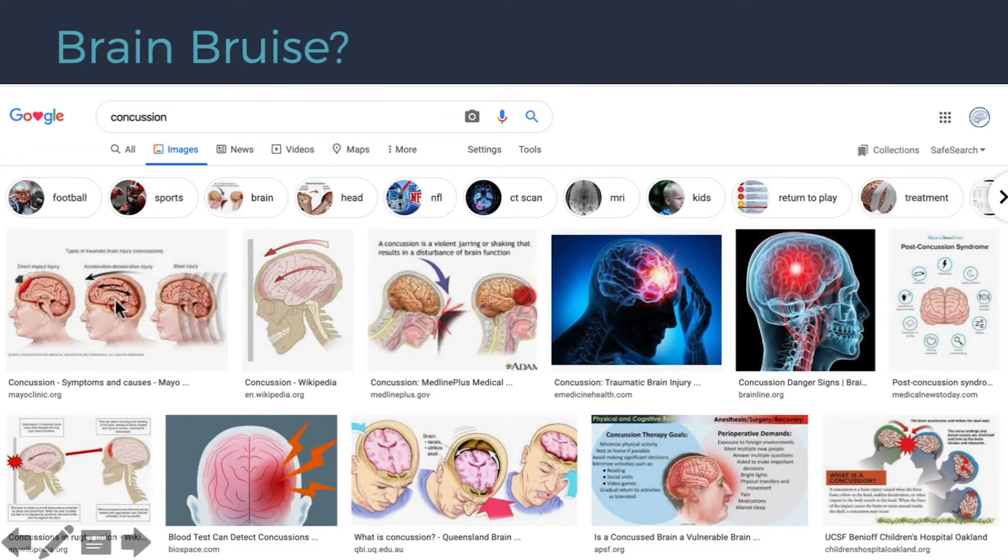And we used to think of concussion as something called a coup contracoup injury. And the brain hits the inside of the skull, it bounces back, and it hits the back part of the skull and damages the outer part of the brain. Well, actually, that's not the case. Concussion is actually a temporary energy deficit.